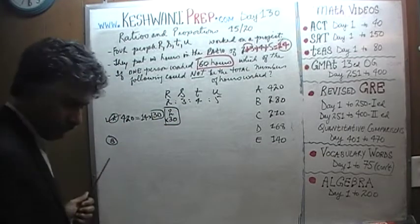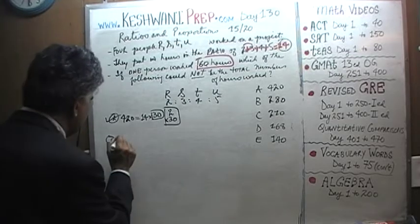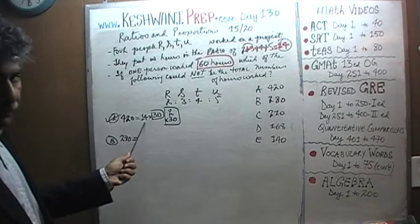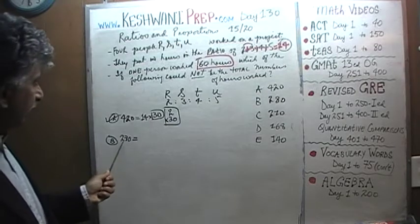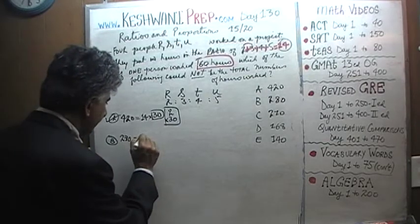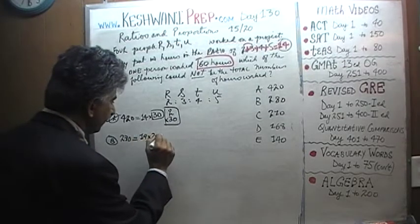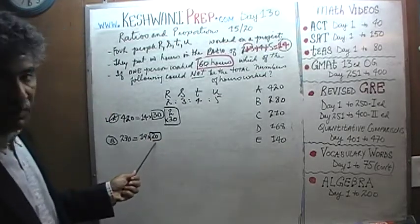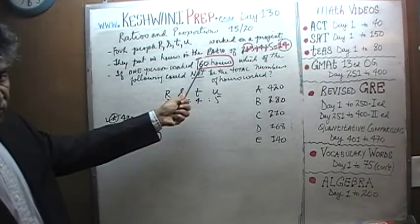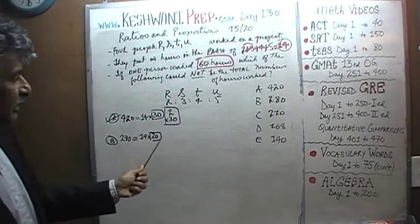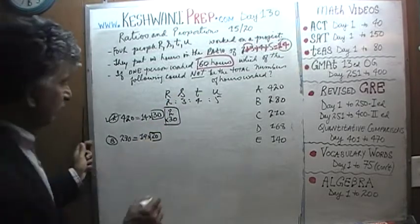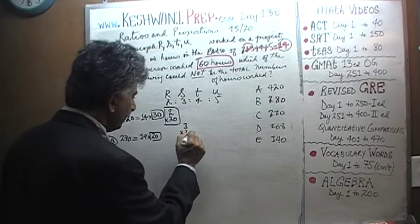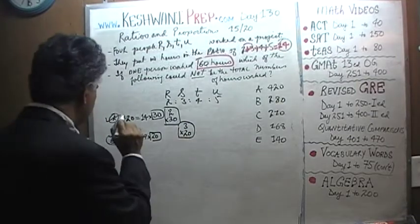Answer choice B says 280. I'm going to pick up speed now. 280 divided by 14 is 20, so each part is worth 20 hours. If each part is worth 20 hours and one person worked 60 hours, we need somebody who worked 3 parts — that's S. S worked 3 parts at 20 hours each, so 280 is also possible.